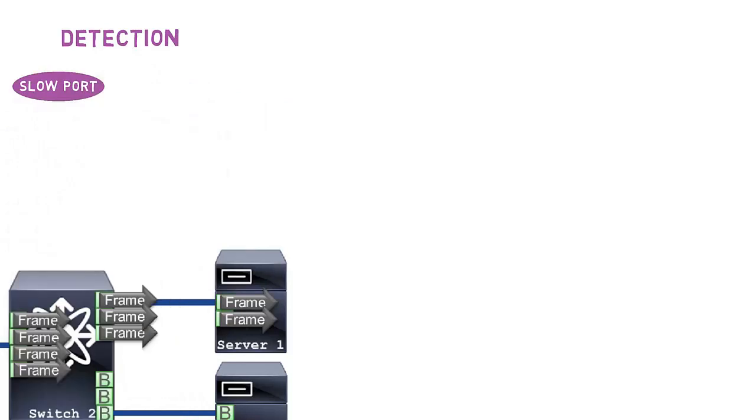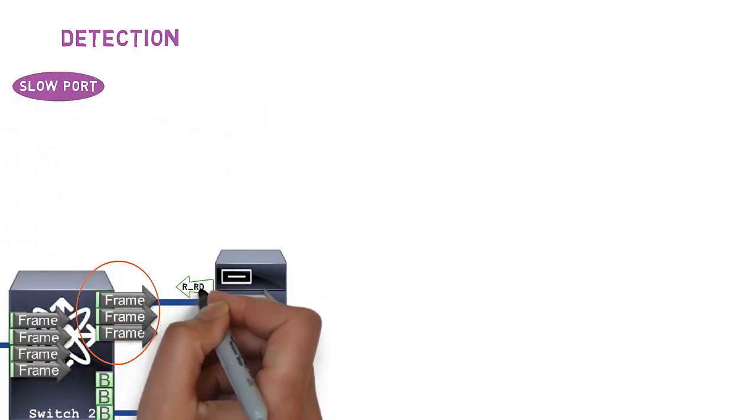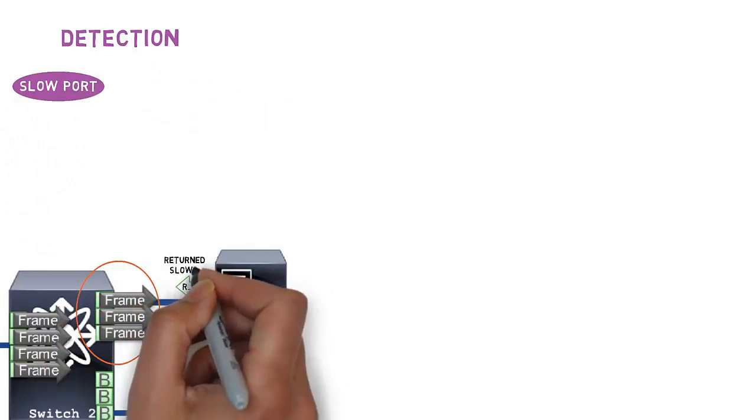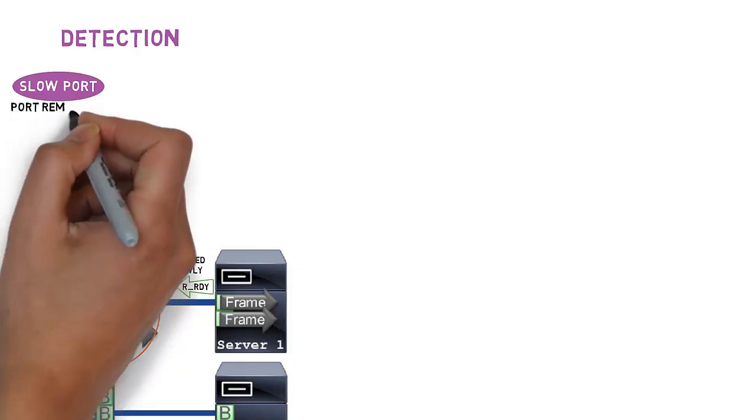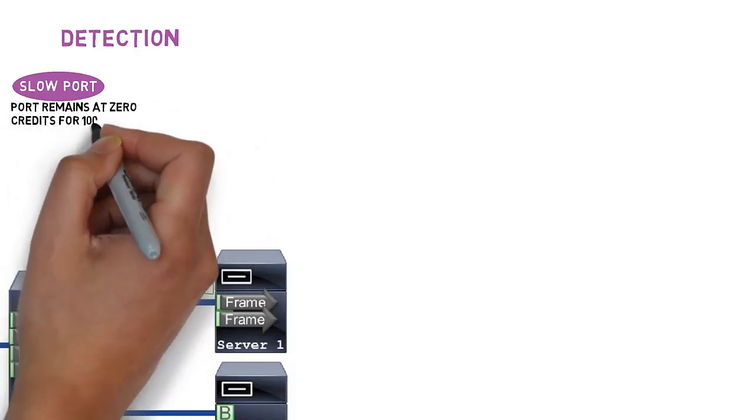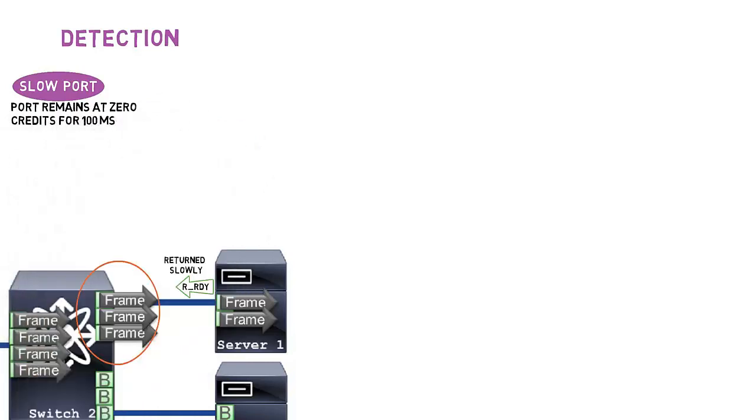If a port connected to an end node is receiving R_RDY slowly, it is called slow port. A slow port still forwards traffic but not at the line rate. A counter is maintained if the port does not receive R_RDY for 100 milliseconds.